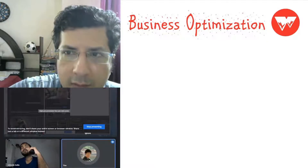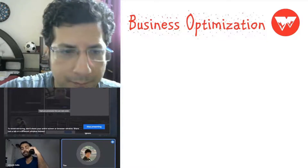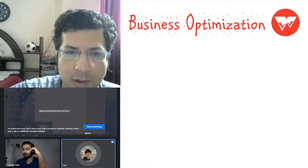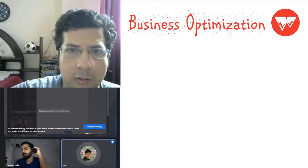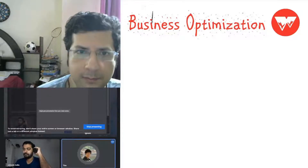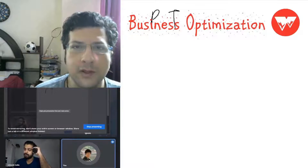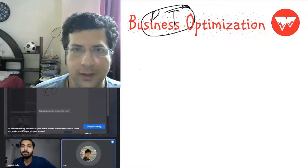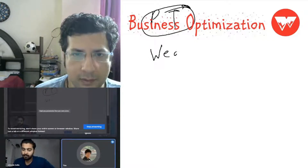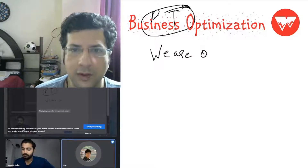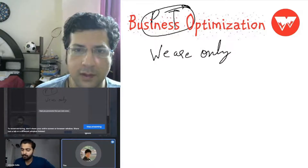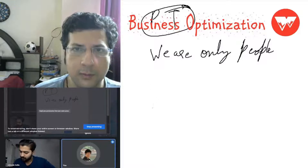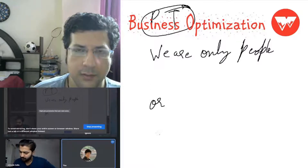So the question is: is this priority table executed only when we have a larger business with multiple people? This priority table needs to be executed even when you are the only person. The question is when exactly do we implement the priority table — when we are the only person in the company trying to achieve a goal, or when there are multiple people? The answer is: in both situations you need to apply the priority table.